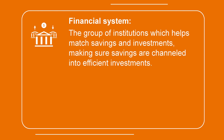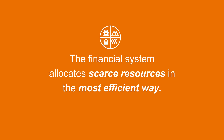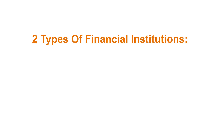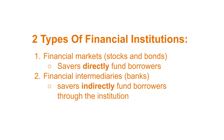The financial system is the group of institutions that helps match savings and investments. Those are, for instance, commercial banks, stock exchanges, or central banks. In this way, the financial system helps to allocate scarce resources in the economy at any given time in the most efficient way, promoting economic growth. There are two main types of financial institutions: financial markets and financial intermediaries. Financial markets allow savers to directly provide funds to borrowers — for instance, through buying stocks and bonds. Financial intermediaries, such as banks, allow savers to fund borrowers indirectly: savers provide funds to banks and banks provide them as loans to borrowers.